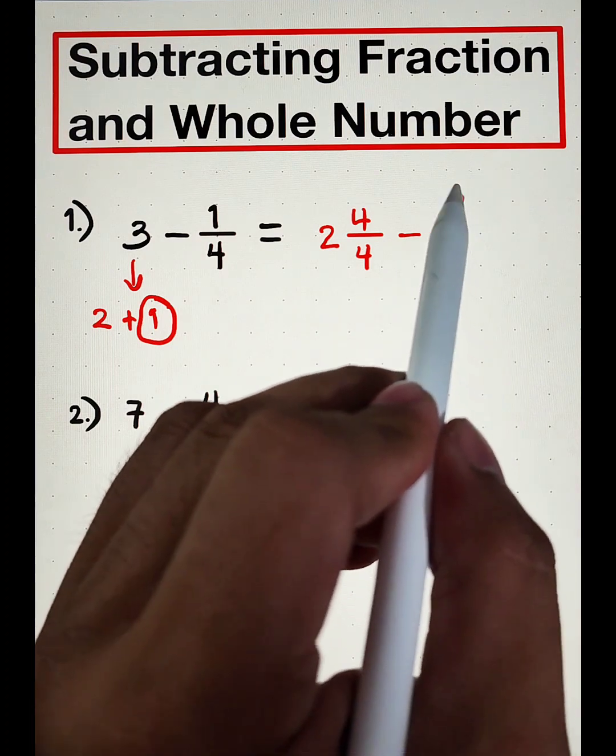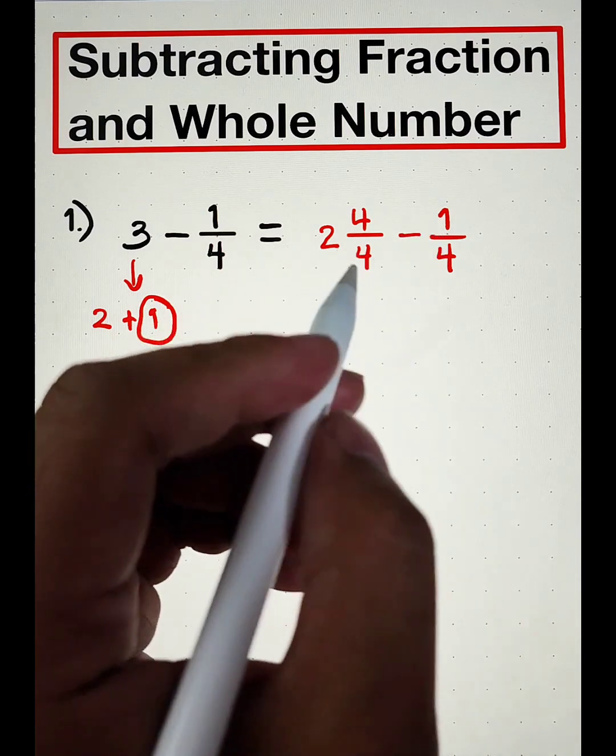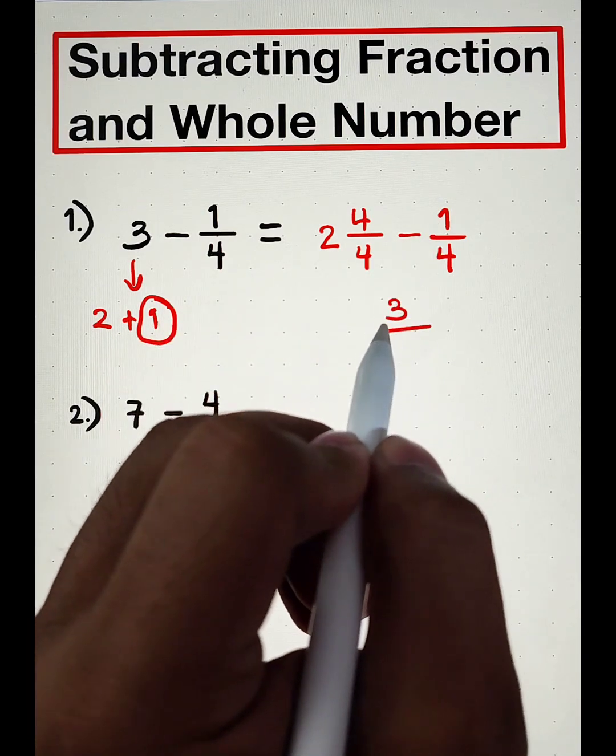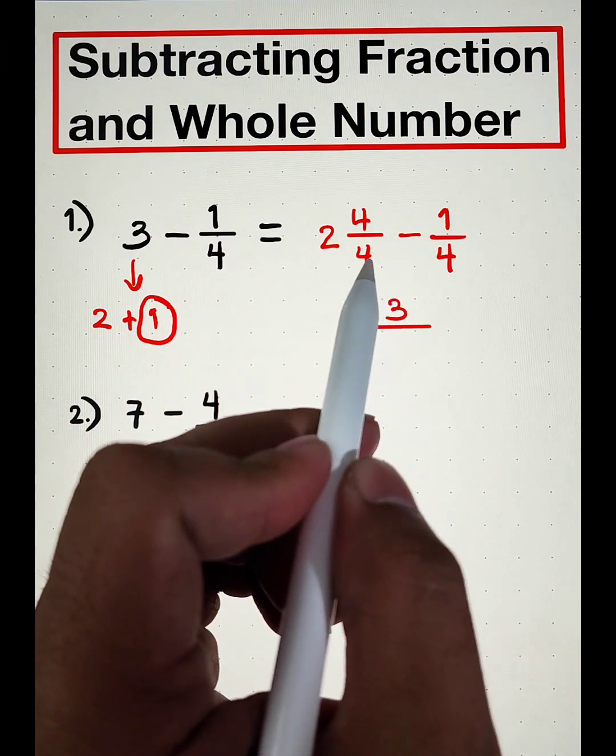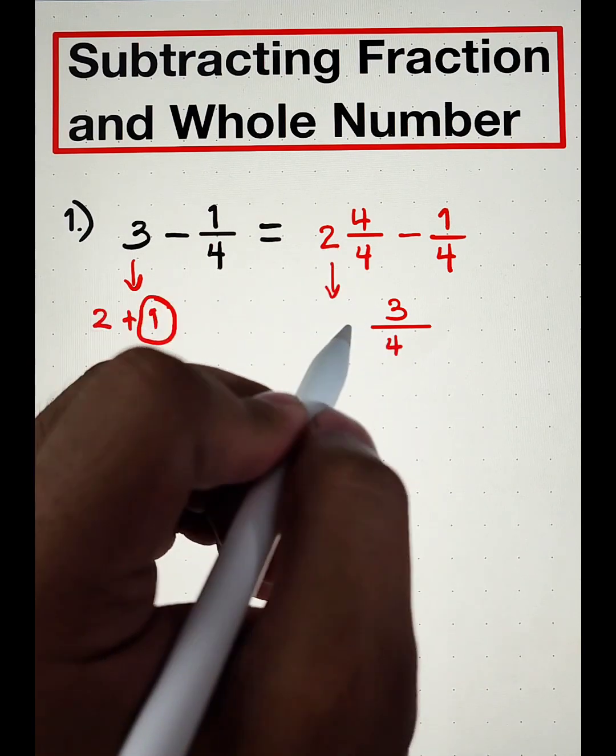And as you can see, we can directly subtract this fraction. And that is 4 minus 1, that is equal to 3. And then since they have similar or same denominator, we will simply copy the denominator and attach the whole number here, which is 2.